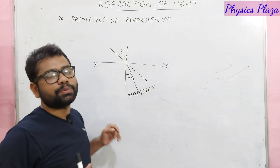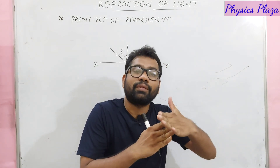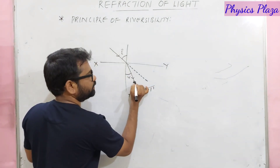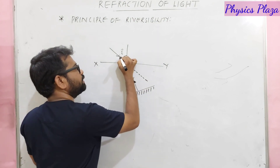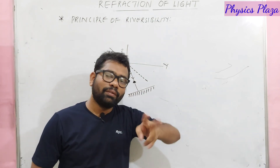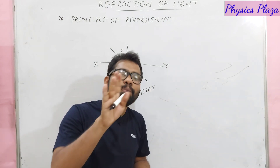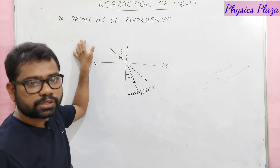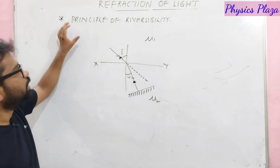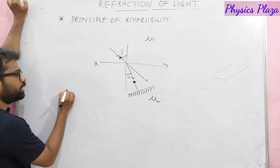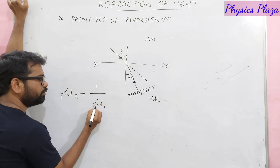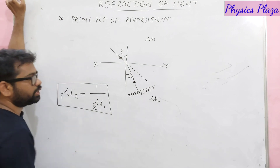Principle of reversibility: when you reverse the direction of light, it takes the same path along which it was previously traveling. Mathematically, the refractive index of second medium with respect to first medium is the reciprocal of the refractive index of first medium with respect to second medium. So μ₂₁ = 1/μ₁₂.